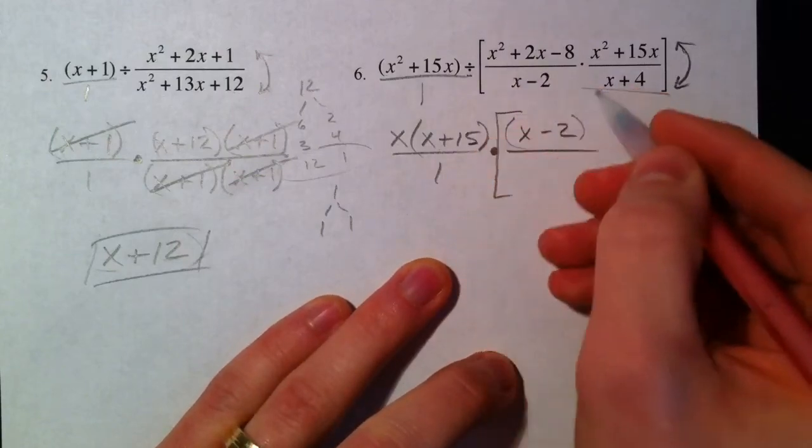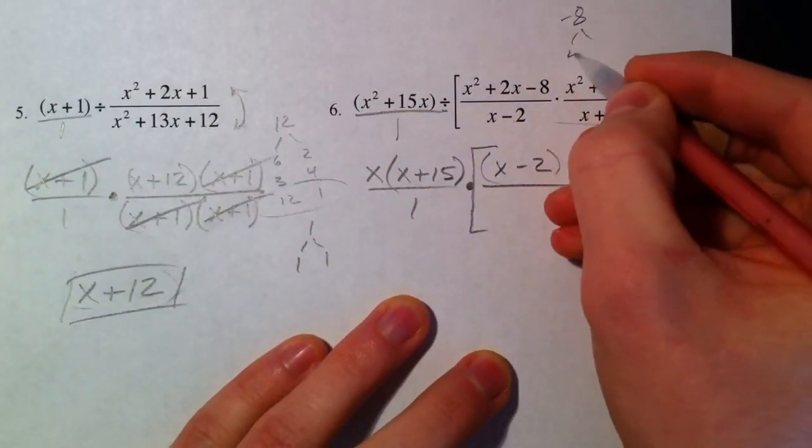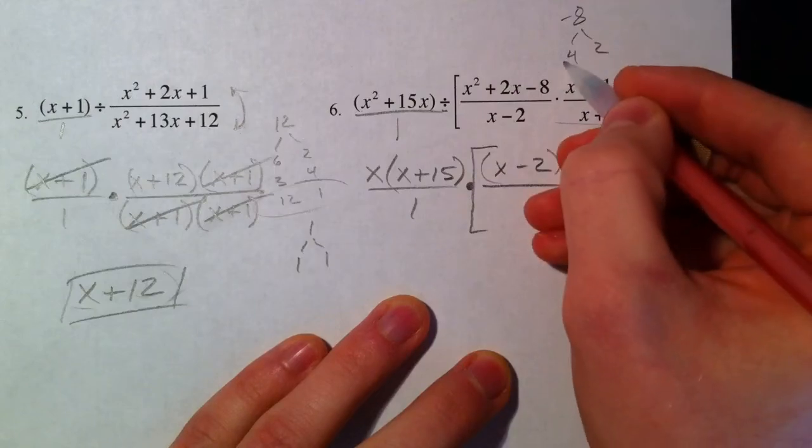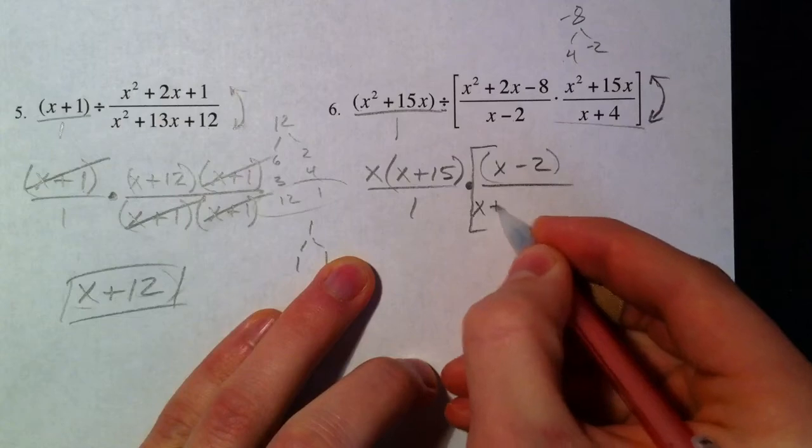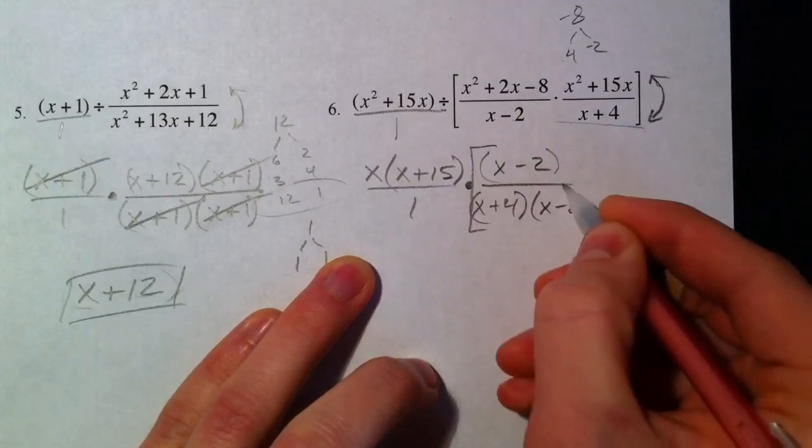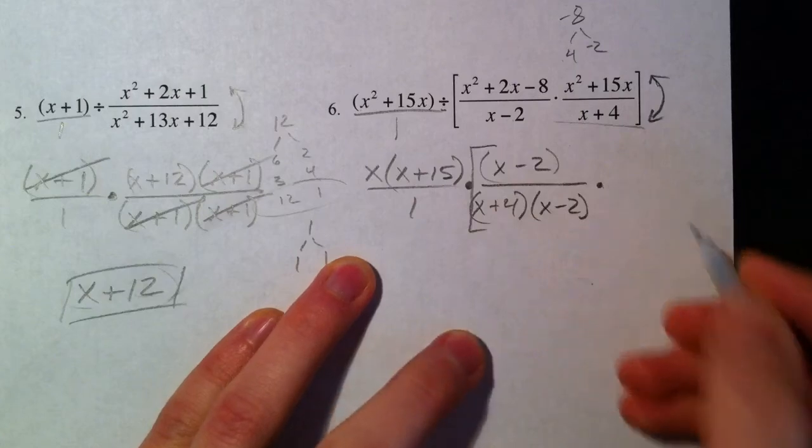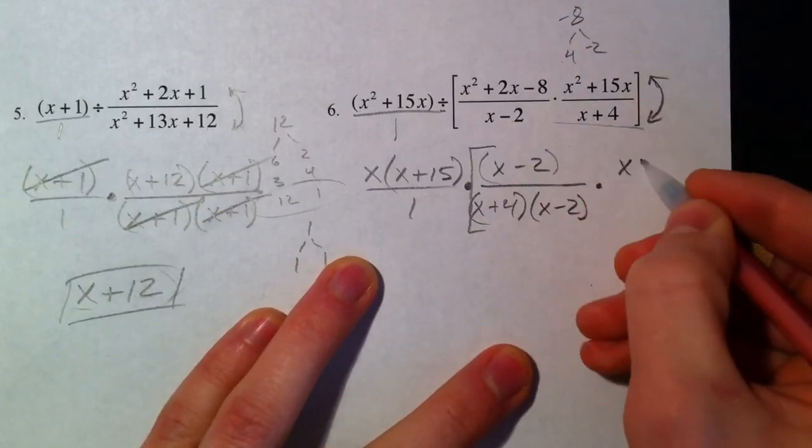And now what multiplies to negative 8 and adds to positive 2? We've got 4 and 2. We need it to be a positive 2, so 4 minus 2: X plus 4, X minus 2. And this X plus 4 also flipped because we're dividing.